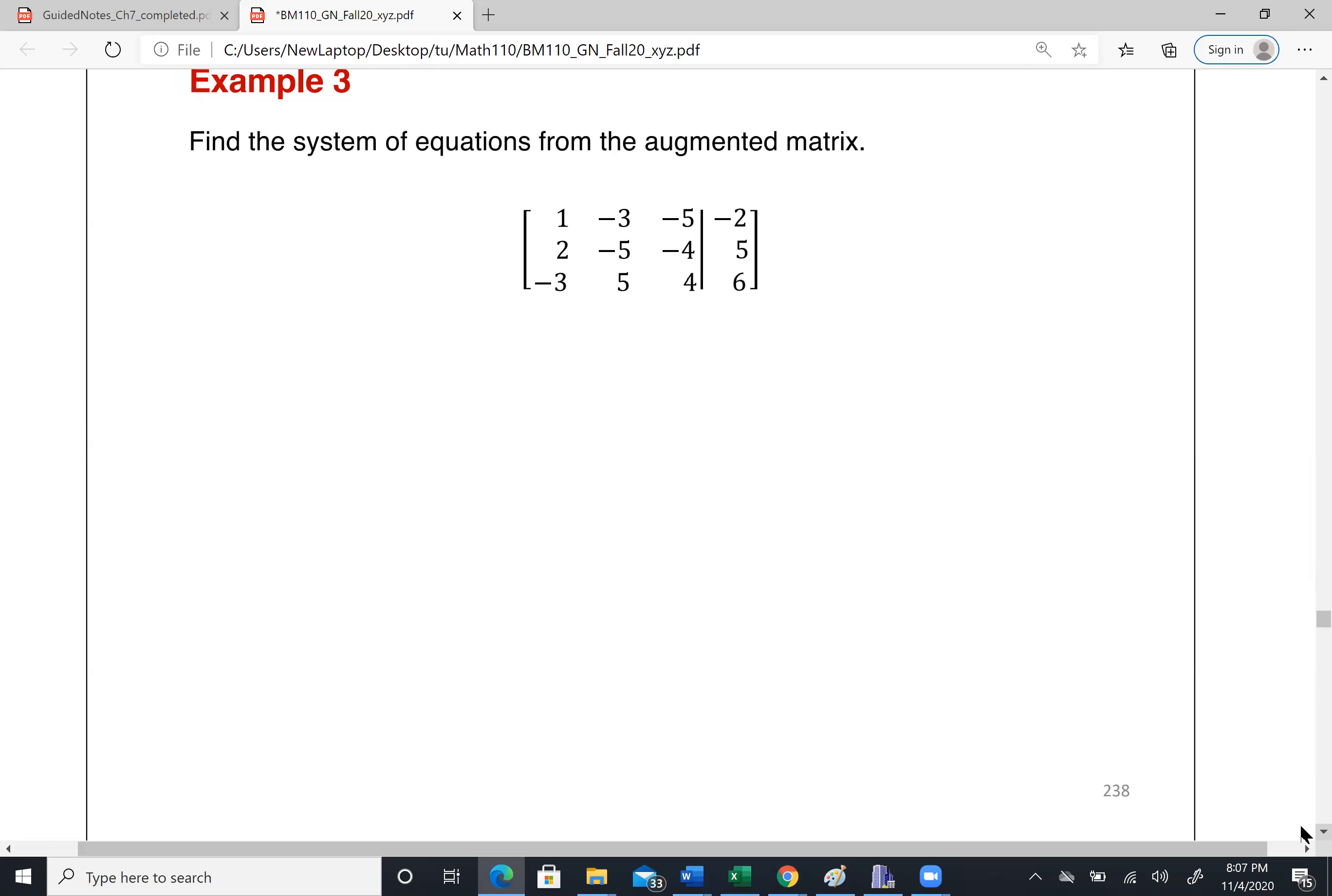Okay, so this is like the backward. We want to find the system of equation from the augmented matrix. So easily you can just, the first one is 1x minus 3y minus 5z equal to negative 2. Second one have 2x minus 5y minus 4z equal to 5. And then 3x plus 5y plus 4z equal to 6.